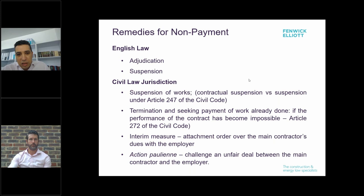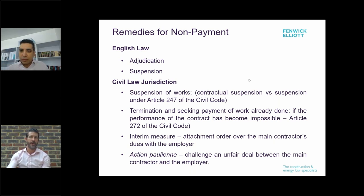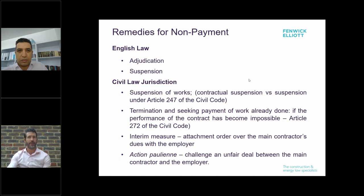We now turn to remedies available for non-payment. Patrick will cover English law first. The Construction Act, in addition to protecting subcontractors by making pay-when-paid provisions ineffective, also provides express remedies to the supply chain to enforce payment rights. The first is statutory adjudication, which allows parties to a construction contract to seek a quick independent determination of disputes during the progress of the works. Although adjudication has been somewhat hijacked by parties referring more complex disputes, one of its primary purposes was to facilitate cash flow and ensure those down the supply chain have a quick and robust mechanism to enforce payment.